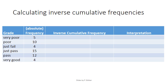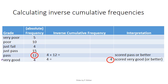Now let's have a closer look at the calculation. We start at the bottom with very good. How many students scored very good or better? Since we don't have anything better than very good, that's simply these four. For the next one, how many scored pass or better? That's the sum of 4 plus 12, which becomes 16.